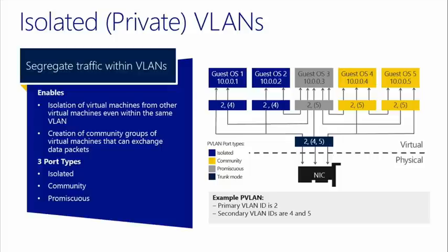There are three port types in private VLANs. Isolated ports can't exchange packets with each other at layer 2 — they can only talk to promiscuous ports. Community ports (yellow) can talk to VMs on the same VLAN ID at layer 2. Promiscuous ports (grey) can exchange packets with any other port on the same primary VLAN ID — the secondary VLAN ID makes no difference. This allows creating groups of VMs that exchange packets in a more isolated way, all configured through PowerShell, not the GUI.